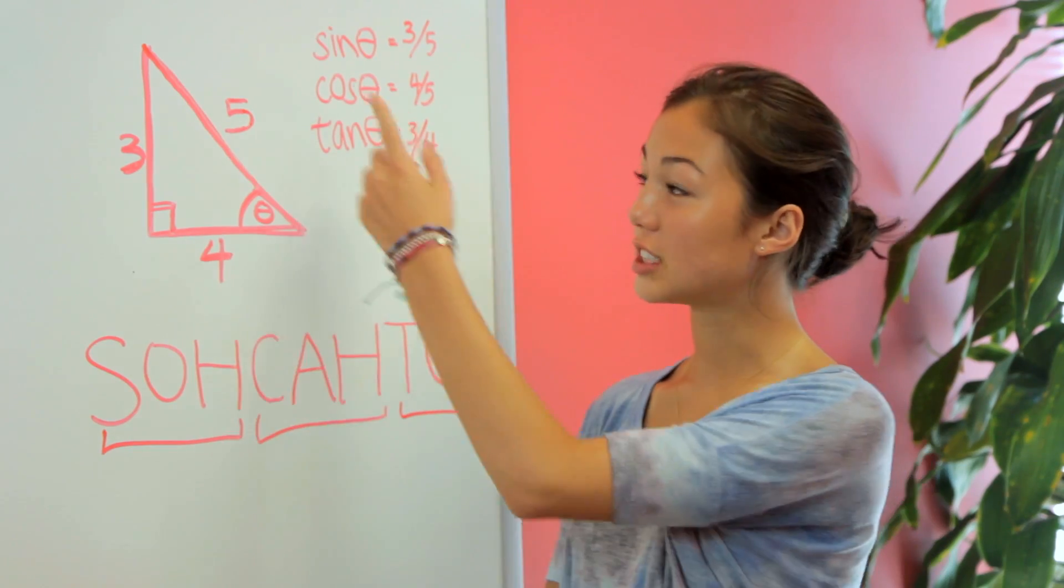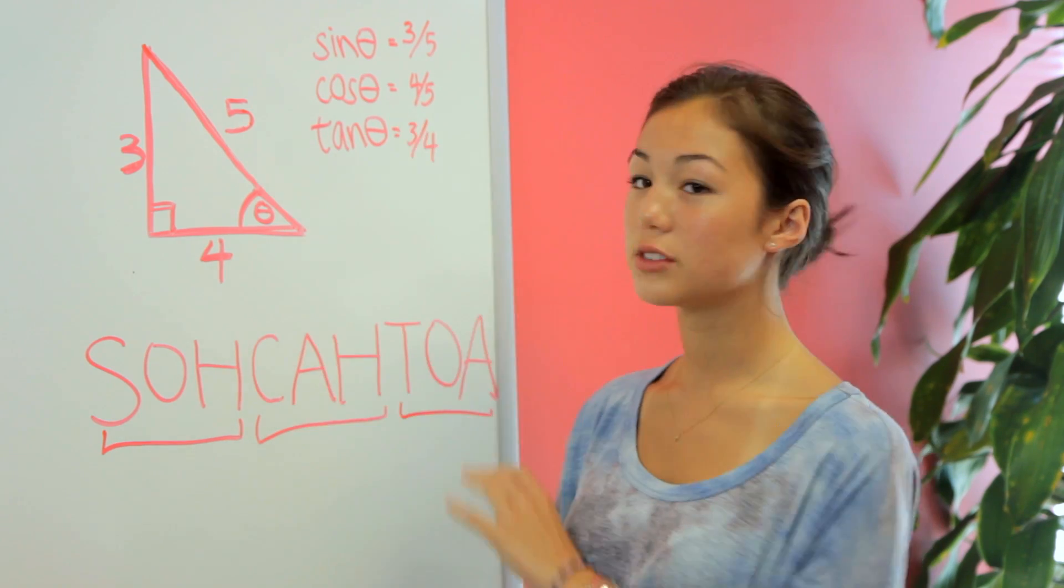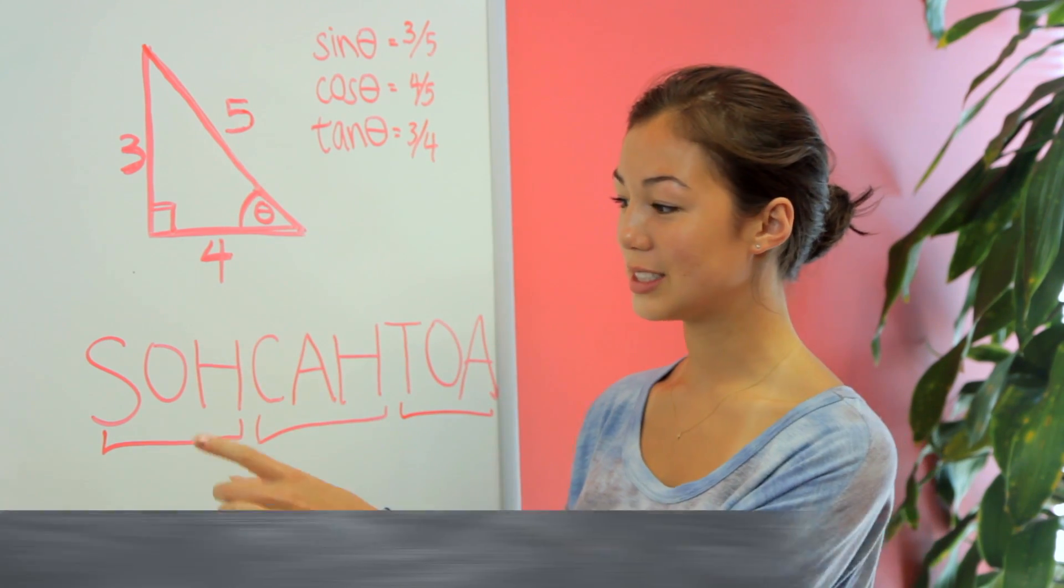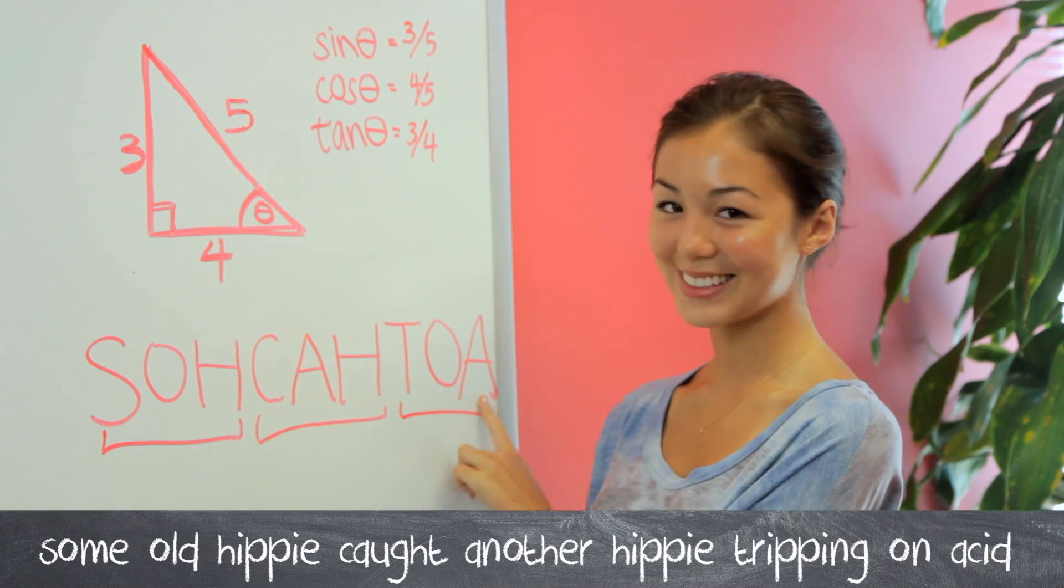In trigonometry, we have the functions sine, cosine, and tangent. To remember what each function means, at my school they teach us some old hippie caught another hippie tripping on acid.